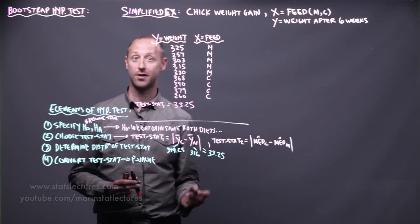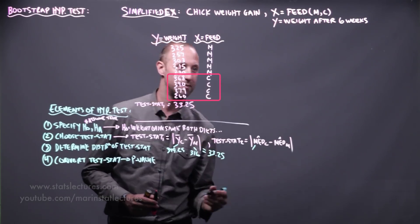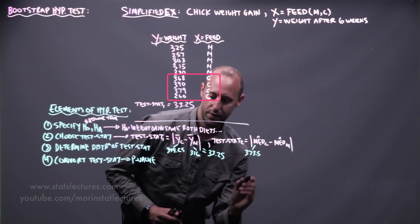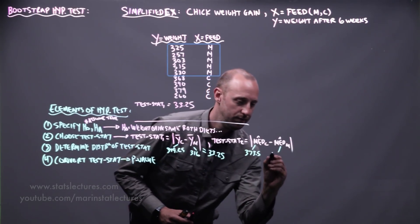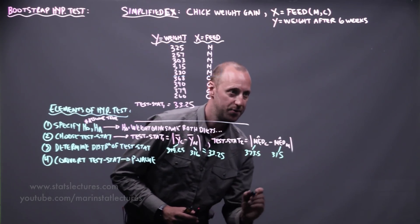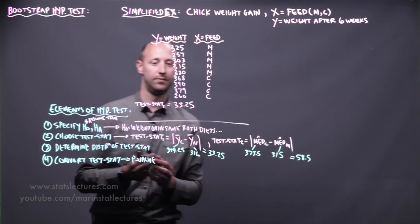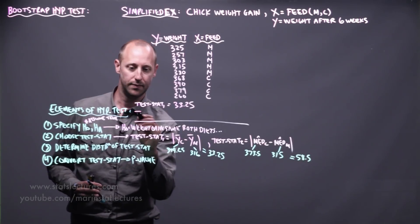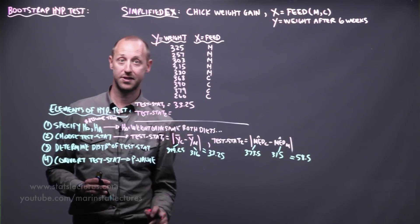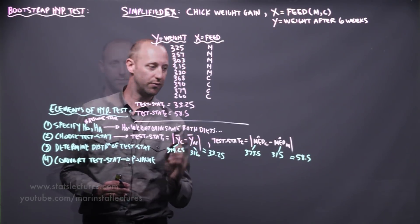Test statistic two is the absolute difference in the sample median for casein minus the sample median for meat meal. The median for casein comes out to 373.5, and the median for meat meal is 315. The absolute difference in these medians comes out to be 58.5.